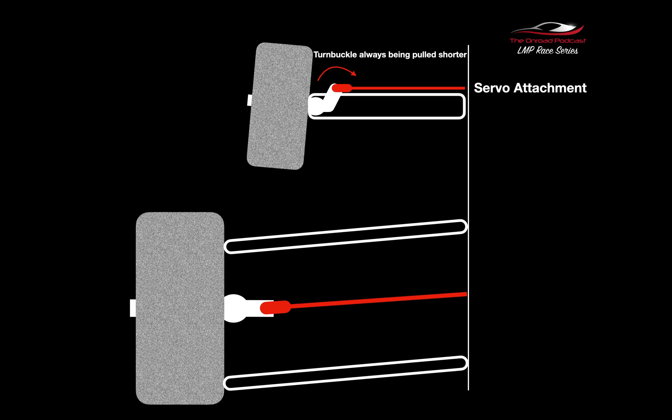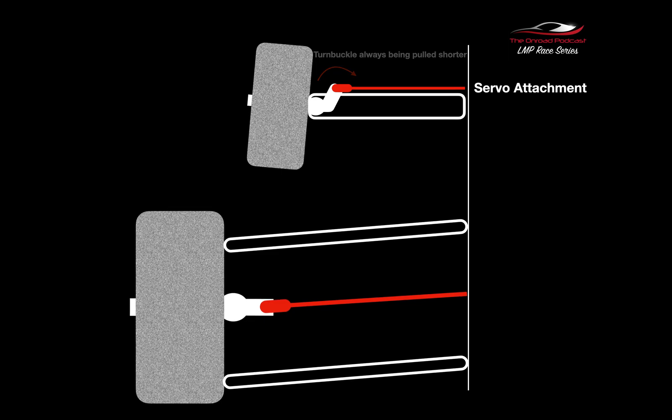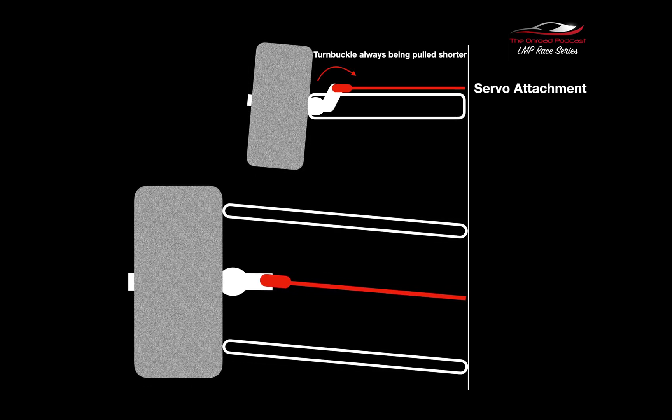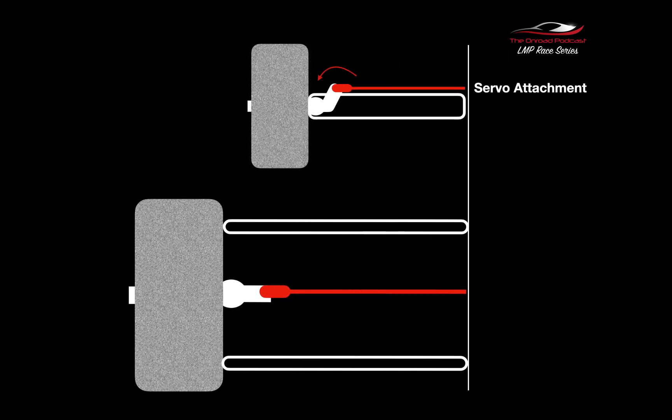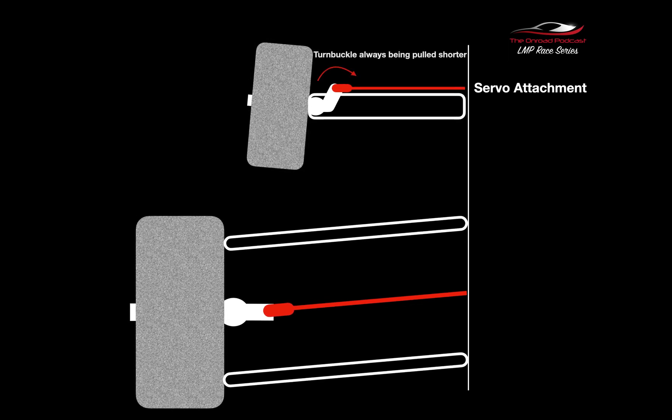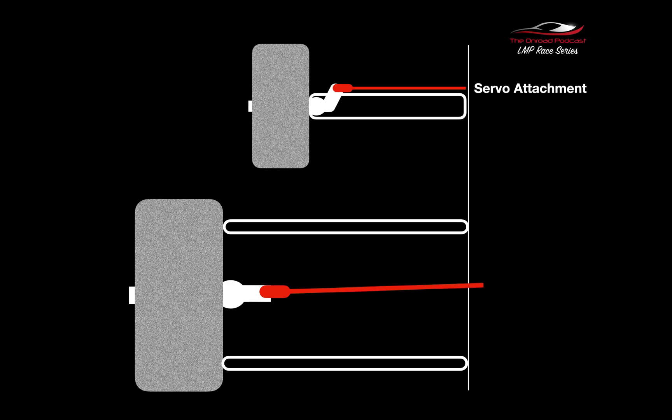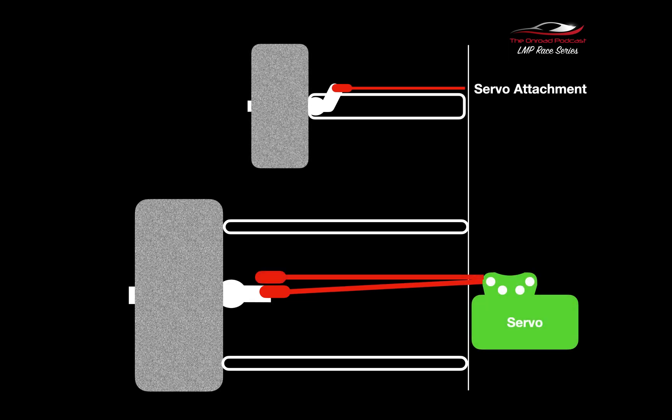Now the top and lower arm moves down again, and you can see once again the turnbuckle is pulled shorter by the top image and it now pulls the wheel back towards the center line again. This keeps on going all the time the wheels are moving up and down.